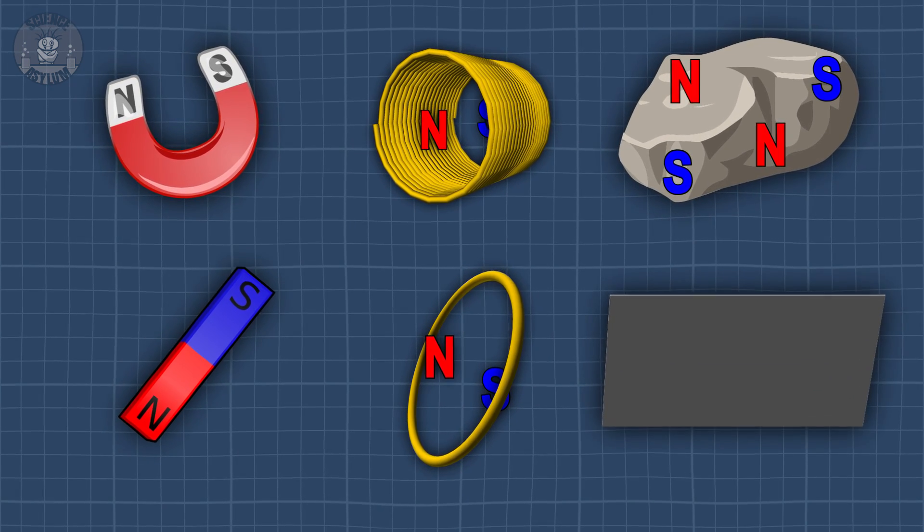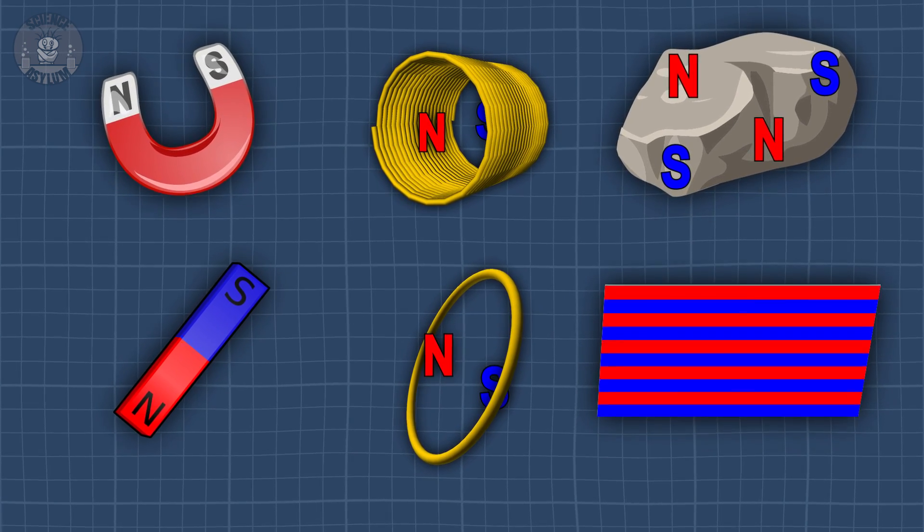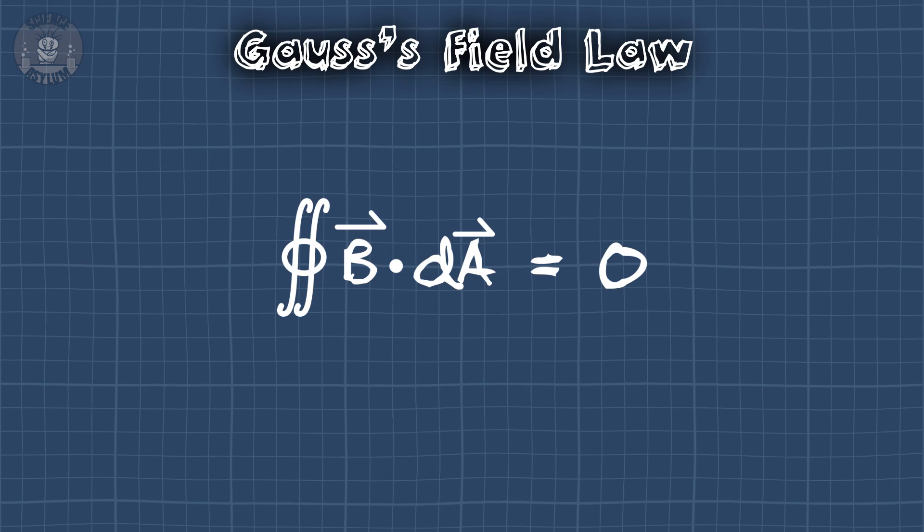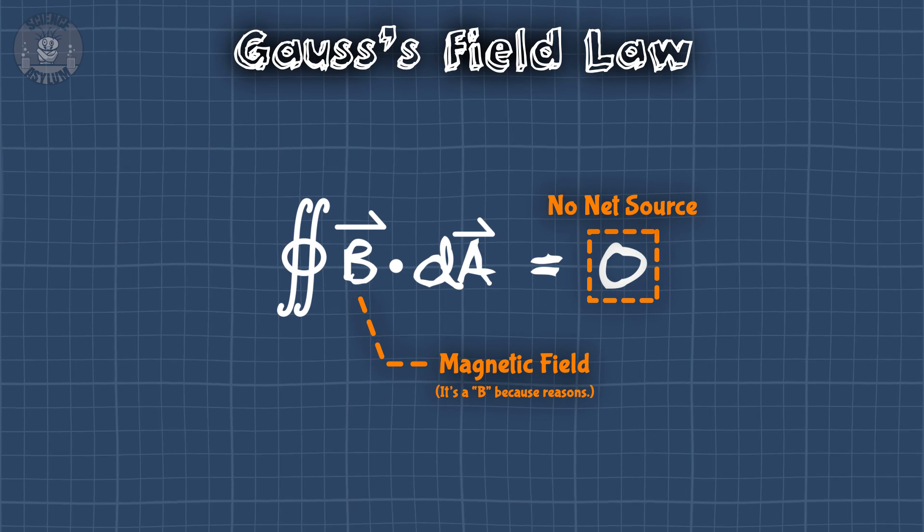Even electromagnets have poles if they're shaped certain ways. Sometimes, magnets have more than one set of poles, but they always come in pairs. Always. It's a behavior summed up pretty well with Gauss's law for magnetism.